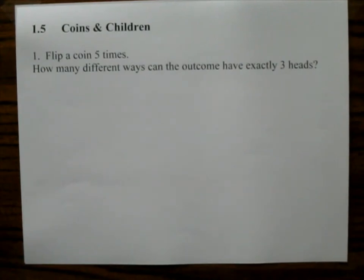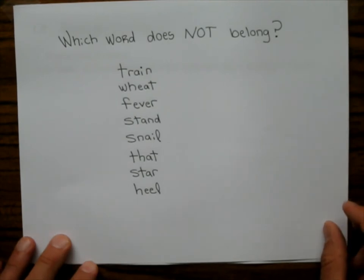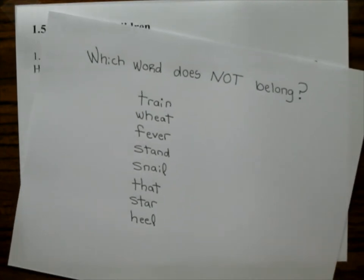Math 230 Cuesta College. I'm Joe Vasta and we're gonna cover section 1.5 which is titled Coins and Children. It's not a very long section and it won't take you a long time to do homework in this section. But before we do that, here's our puzzle of the day. Which word does not belong? So at the very end of this video we'll point out which word doesn't belong. These are optional puzzles here.